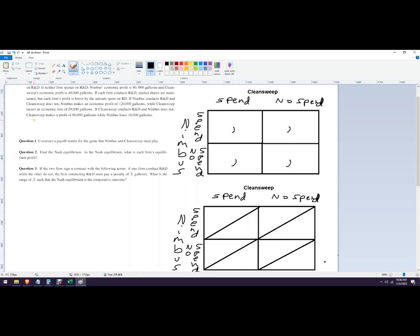So this would be left and this would be top. All right, so let's do Clean Sweep in red and we'll do Nimbus in blue. It makes it a little easier if you color code it this way.